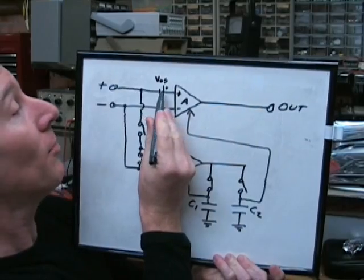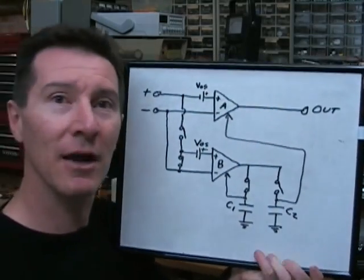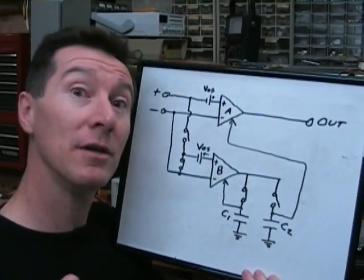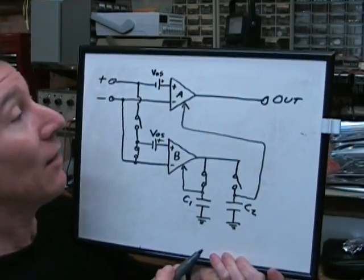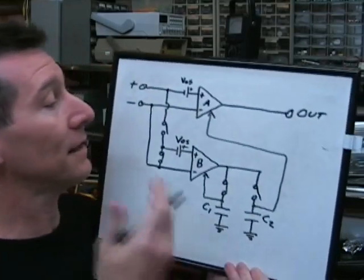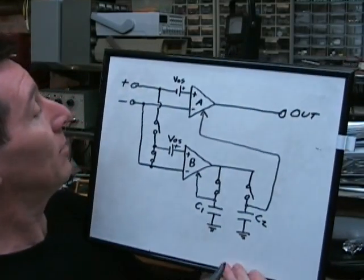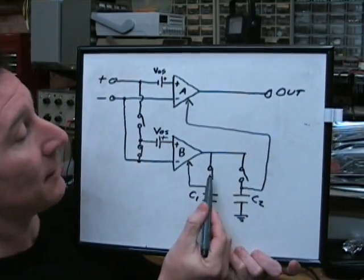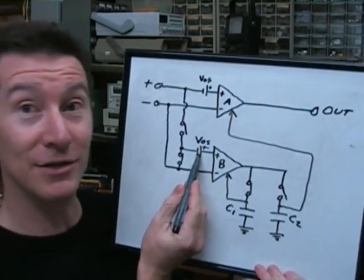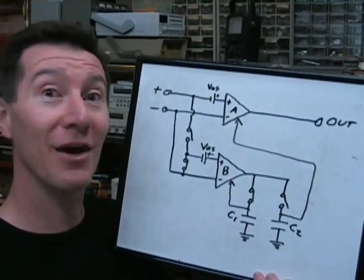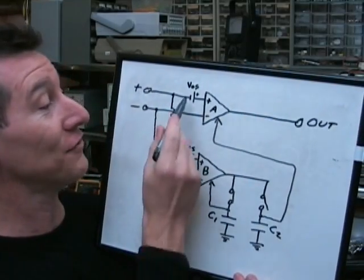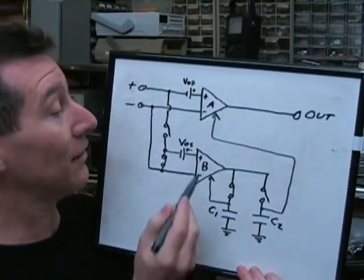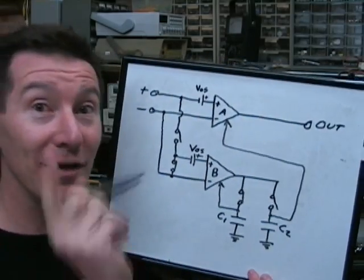A regular op amp has an offset voltage, VOS. A typical op amp, that might be a millivolt or something like that, which is quite large for precision DC applications. Now, what we want to do is zero that out. We want to null that out. That's what these chopper or auto zero amplifiers do. And the way it does this, it's got four internal switches. It's got a second op amp, which also has its own offset voltage. It's really quite neat how it's actually going to offset not only this one, but its own. This second amplifier is called the null in amplifier.